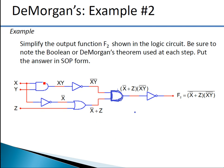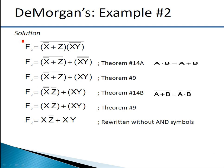Let's consider another example: simplify the output function shown in the logic circuit. Note the boolean or De Morgan's theorem used at each step and put the answer in SOP form. From the given circuit, the final expression is f2 = [(x̄ + z) · (xy)̄]̄. Let's try to simplify this expression.